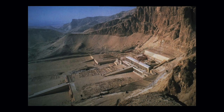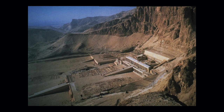Hatshepsut built her temple directly next to that of Mentuhotep, the founder of the Middle Kingdom and a giant in the history of Egypt. So you have to ask: why did she build right next to this other terraced structure into the mountain? We can speculate. First, she was a woman, and while it was not unheard of for a woman to be pharaoh — she was not the first — it was still very rare. So she needed this to claim some kind of legitimacy. Also, she was the stepmother of a young man who thought he was supposed to be pharaoh, so this connection to Mentuhotep might have worked to strengthen her claim to rule as well.